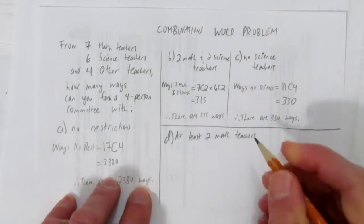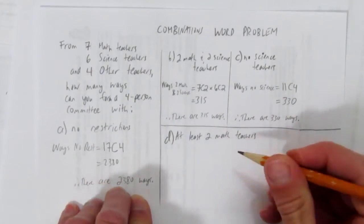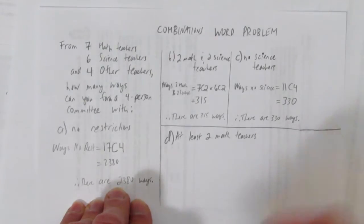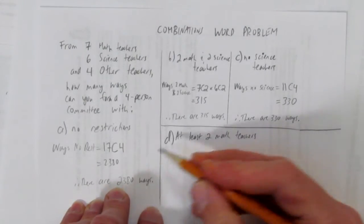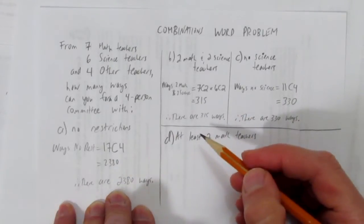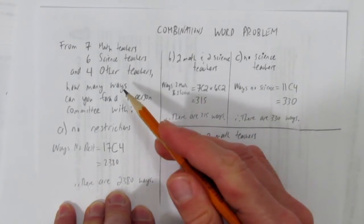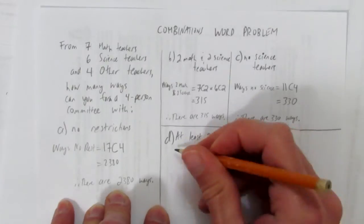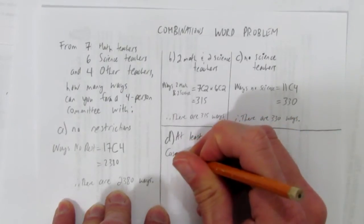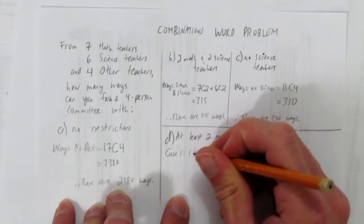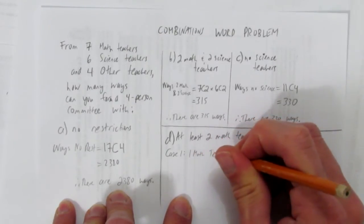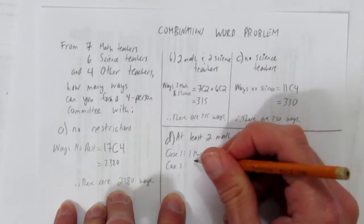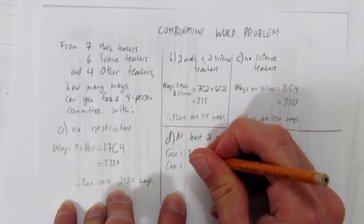The last situation isn't so simple. It isn't hard, but it's got a bunch of cases. It asks, can we form this four person committee with at least two math teachers? There's two ways to do it. You could go the indirect method, which would be find the total number, which we already have, and subtract the case of no math teachers, and subtract the case of one math teacher. I'm going to solve it just straight up and figure out three cases. One math teacher won't do it. I need at least two.